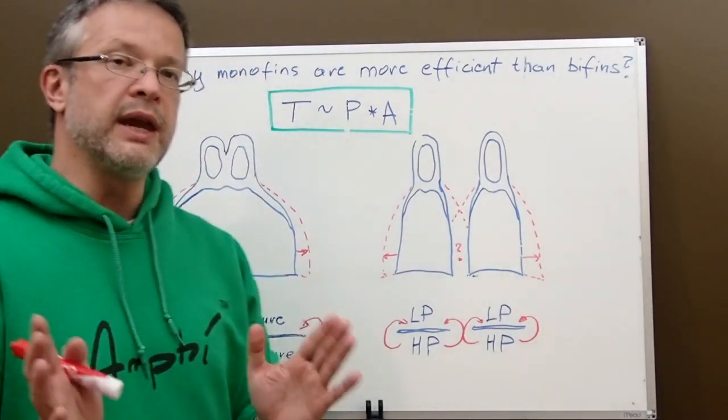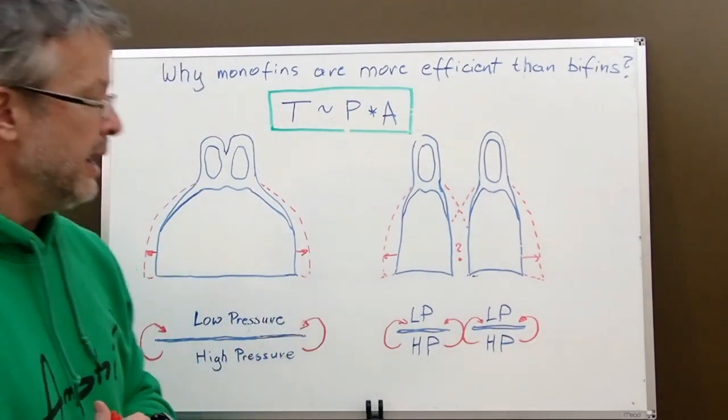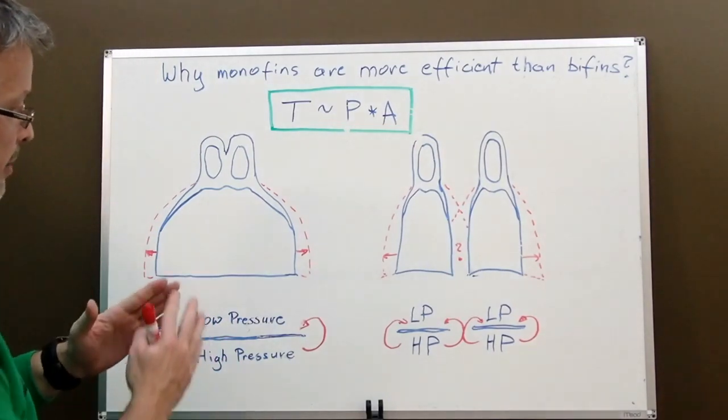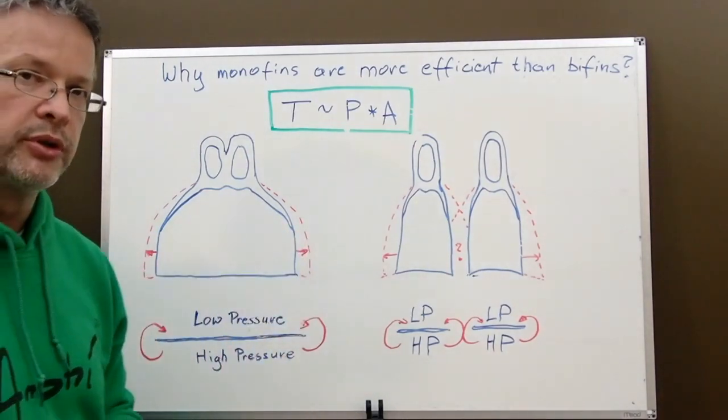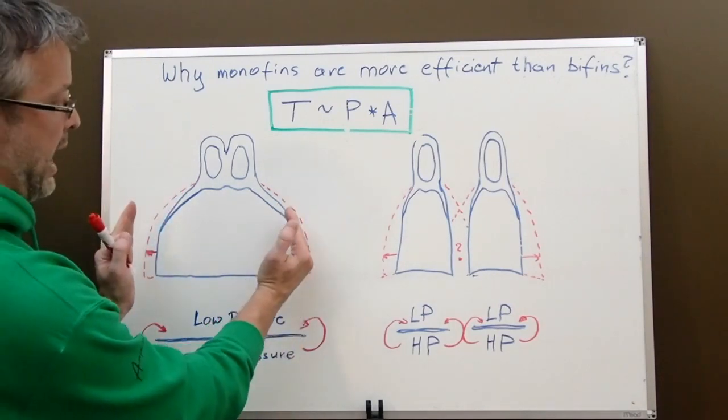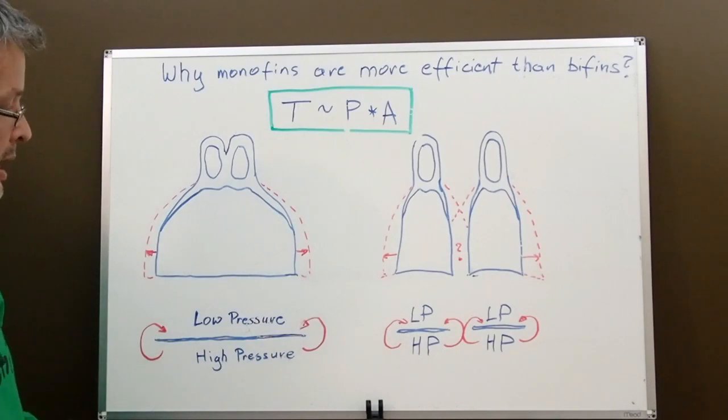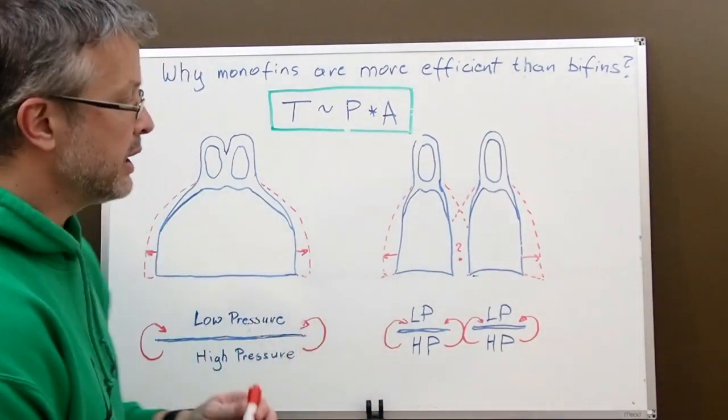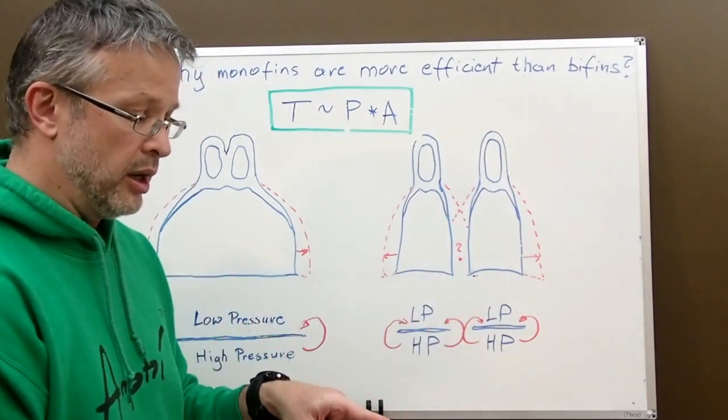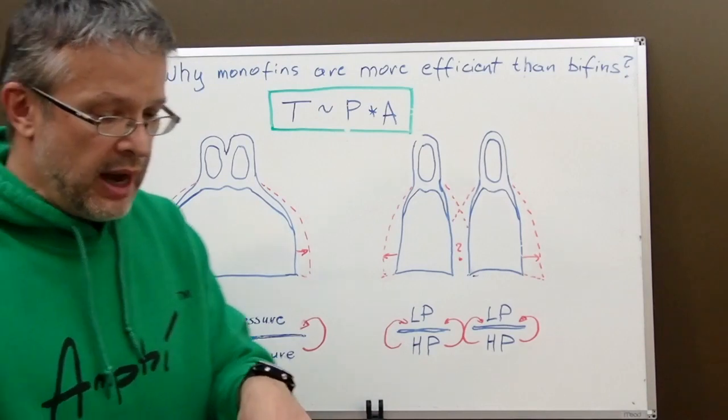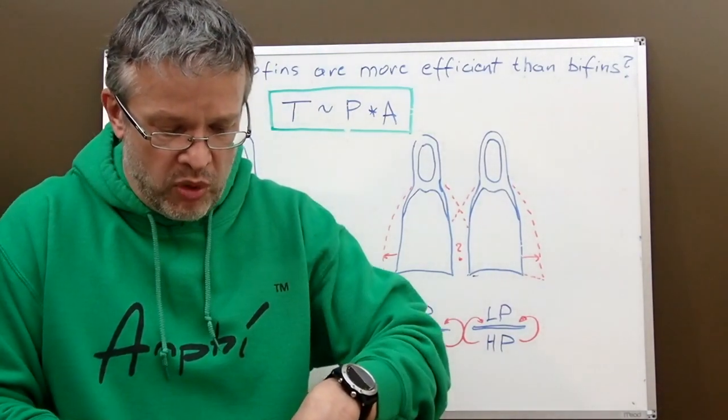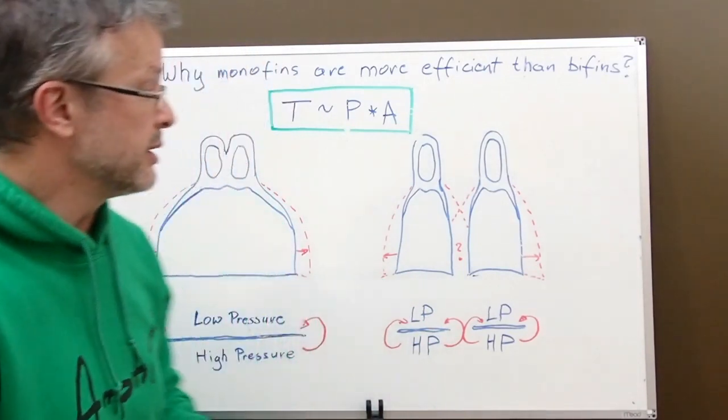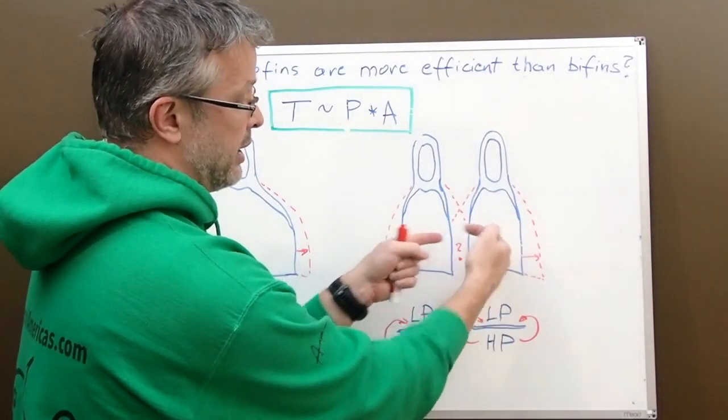But there's one more thing which I wanted to emphasize. You can increase thrust by increasing the surface area. With a monofin it's relatively simple to do. We can increase this by just adding width to the monofin. With bifins you are limited by human anatomy. We cannot increase the width inward between the legs. We cannot have a situation where our legs become more and more pushed apart because it will increase drag and it will be just difficult to operate. So there are certain anatomical limits to increasing width inwards.